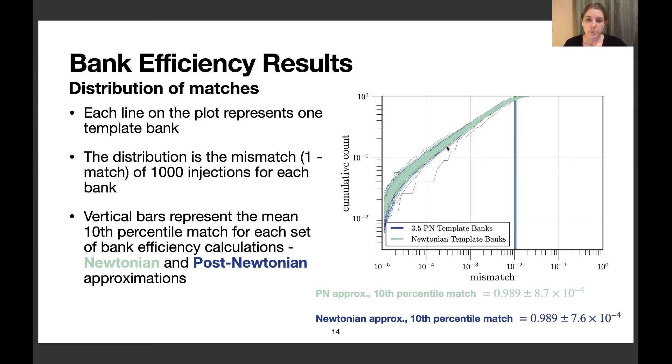The green lines represent calculations where we used Newtonian template approximation, and the blue lines are where we used 3.5 post-Newtonian approximation. The 10th percentile match for both sets of banks was 0.989. There's very good agreement between the 3.5 post-Newtonian and Newtonian approximations, indicating it's sufficient to use Newtonian template banks for these calculations.